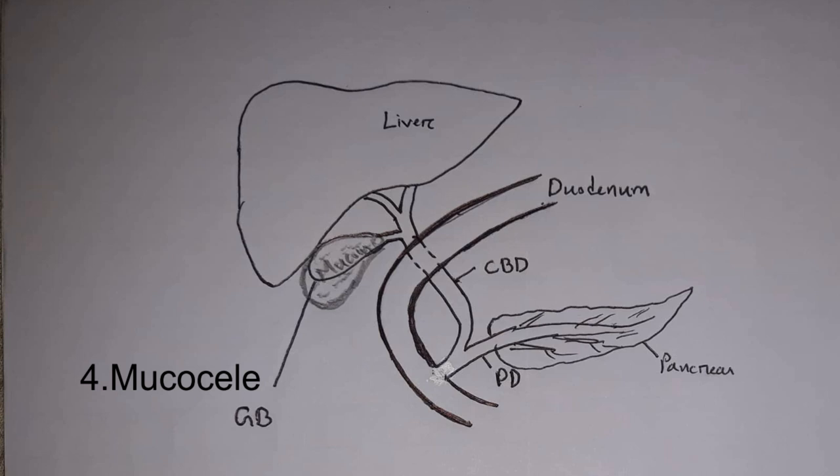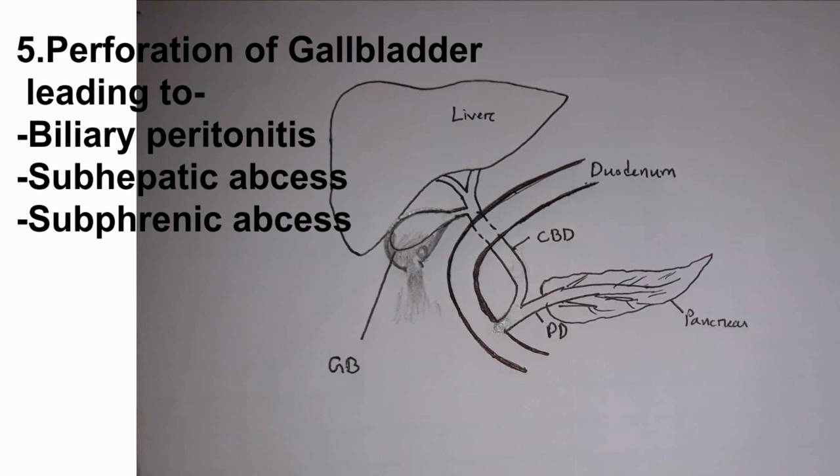The gallbladder stone obstructs the cystic duct causing a mucocele. There is also perforation — the gallbladder can perforate due to a stone and chronic irritation, leading to bile spilling into the whole abdominal cavity.